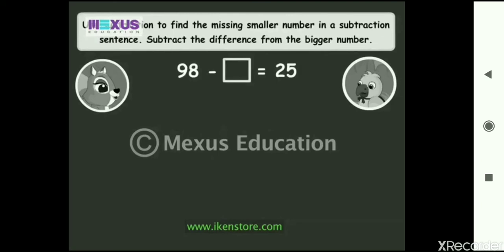Here is a subtraction statement with a missing number. We use subtraction to find the missing smaller number in a subtraction sentence. We subtract the difference from the bigger number. Can you try, Amber? Yes, we need to subtract 25 from 98. 8 minus 5 is 3. 9 minus 2 is 7. So the missing number is 73.